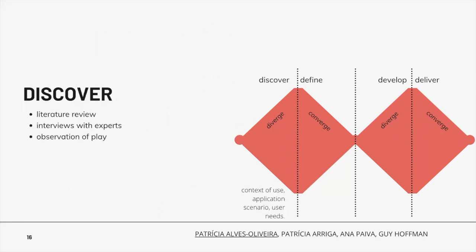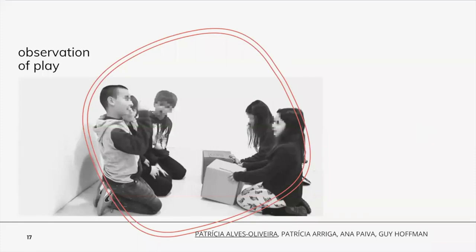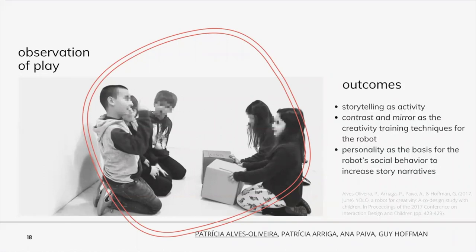In the first stage, discover, we collected information that led to an understanding about the robot's context of use, application scenario, and how it could meet the user's needs. We performed a literature review on creativity and children, conducted interviews with creativity experts, and observed how children play. Without disrupting their play routine, we observed, took notes, and recorded the play patterns of children. We noticed they used storytelling for everything, so it became obvious that our robot would fit a storytelling activity.